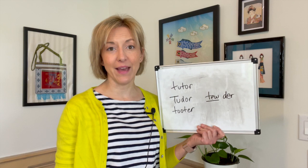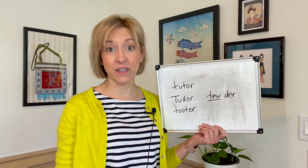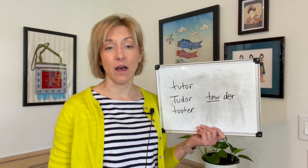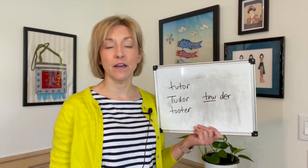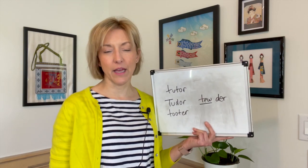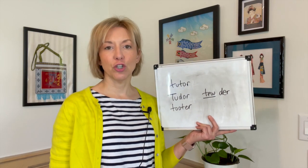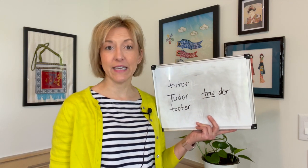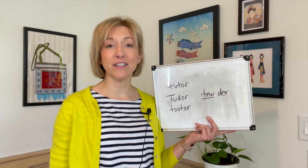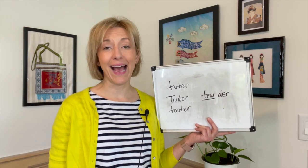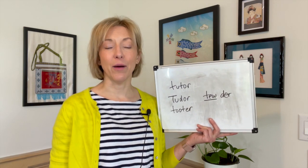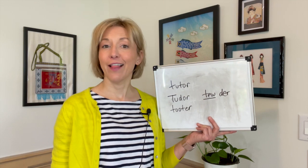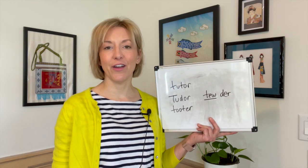To make the second syllable, the tongue is in the same place for the T, but the voice box is on and moving — 'duh.' Then square tense lips for the 'rrr,' with the tip of the tongue down or flipped back, and the back of the tongue pulled high up. 'Dir, dir, dir.' Let's put it all together.